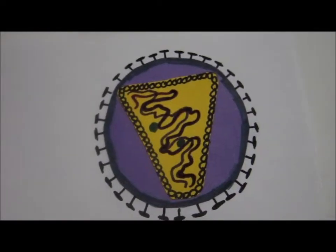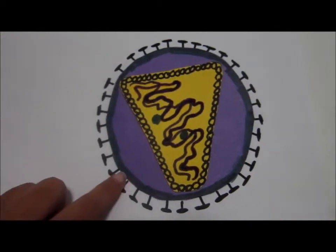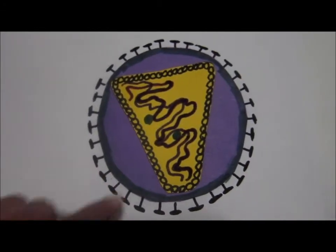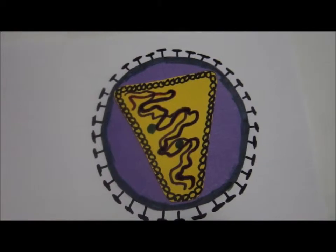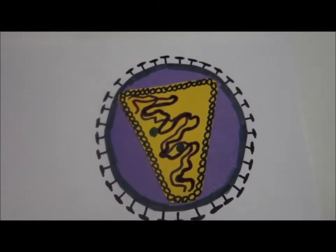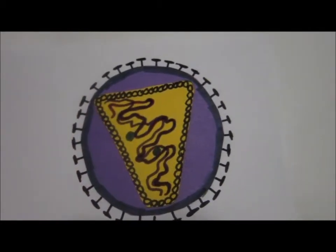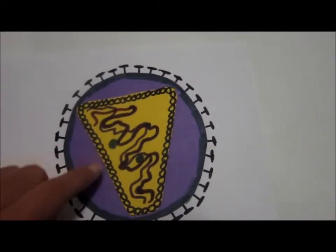This is HIV. Glycoproteins surround the viral envelope. Inside is a capsid, the protein shell of a virus. The capsid is enclosed around genetic material of the virus as well as reverse transcriptase, an enzyme of HIV.